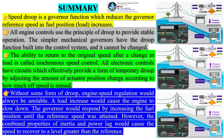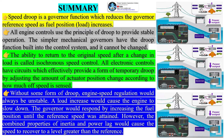In summary, speed droop (DW) is a governor function which reduces the governor reference speed as fuel position — load — increases. All engine controls use the principle of DW to provide stable operation. The simpler mechanical governors have the DW function built into the control system and it cannot be changed. The ability to return to the original speed after a change in load is called isochronous speed control. All electronic controls have circuits which effectively provide a form of temporary droop by adjusting the amount of actuator position change according to how much off-speed is sensed.